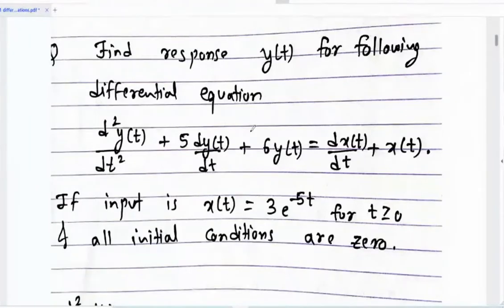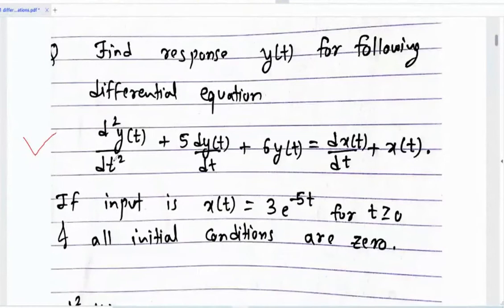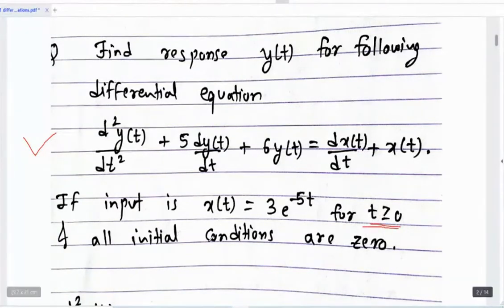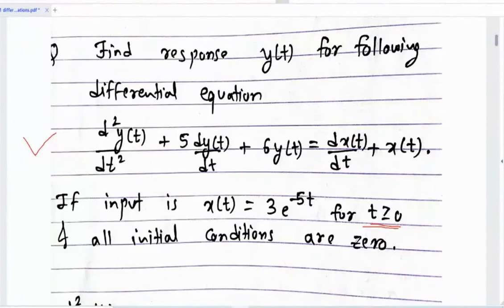Find the response y for the following differential equation. One differential equation is given. The input x(t) is 3e^(-5t) for t ≥ 0, and all initial conditions are 0. In case of differential equations, we always have the initial conditions as 0.